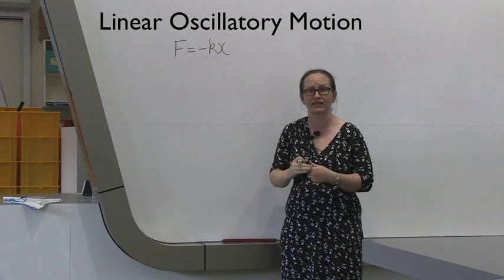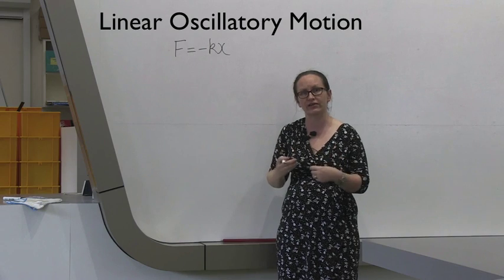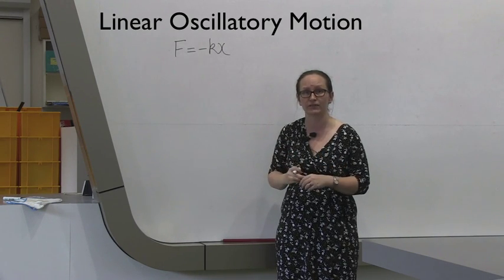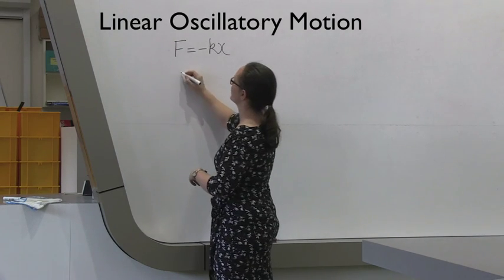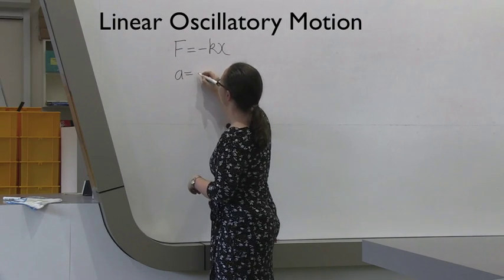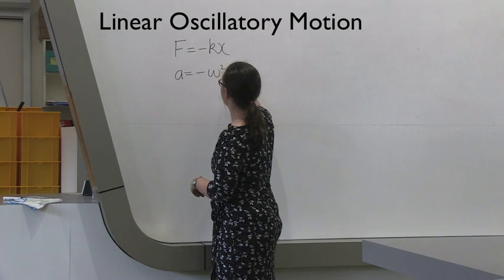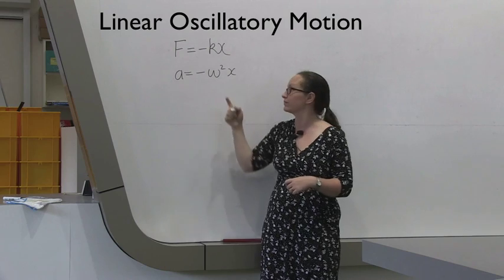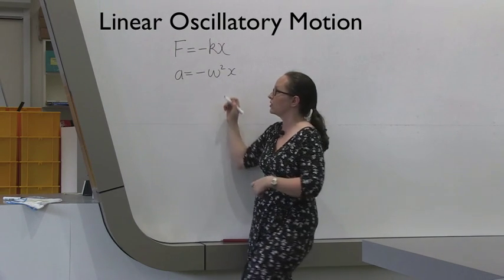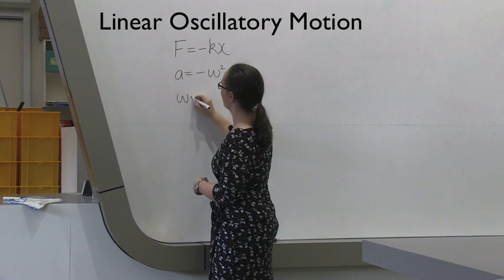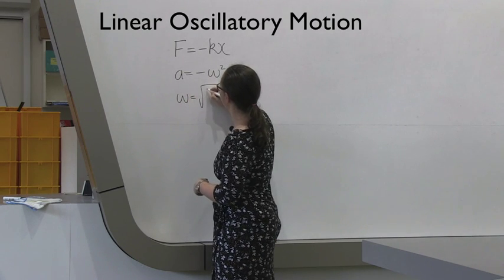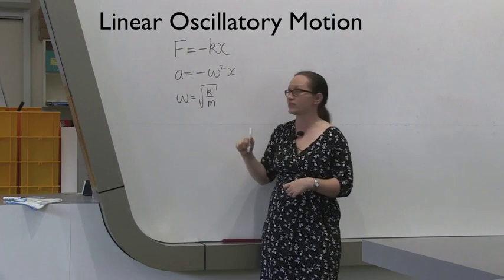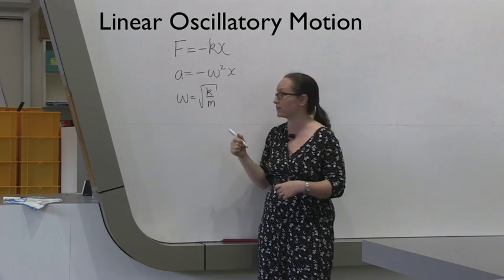In the second part of the experiment, you're going to use an indirect method, where you're going to be making use of simple harmonic motion in the spring. Simple harmonic motion tells us that the acceleration is equal to minus omega squared x, where x is the displacement from equilibrium and omega is the angular frequency. We know for a spring that omega is equal to the square root of k on m, where k is the spring constant and m is the mass added to the end of the spring.